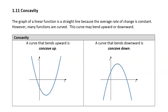We talked about linear functions, and we said that a linear function was a function that had a constant rate of change. If a function is not linear, then it has some sort of curve to it. And we can describe that curvature with a concept called concavity.